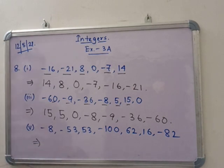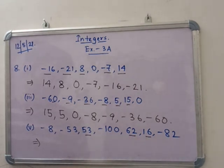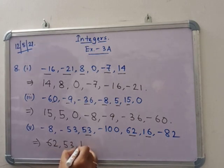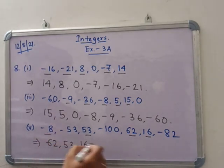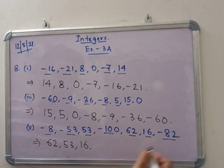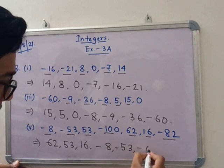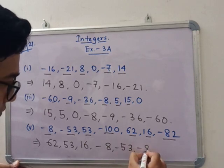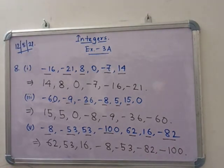Now the last one for descending order. See that the positive numbers — 62 is the biggest here. So 62, then 53, then 16. Now for the negative numbers: minus 8, minus 53, minus 82, minus 100. This is the descending order of the given integers.